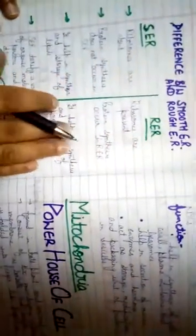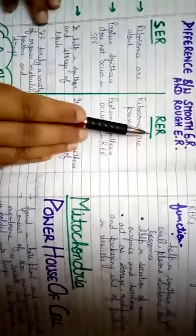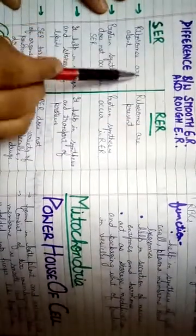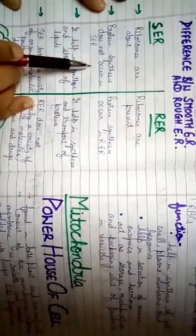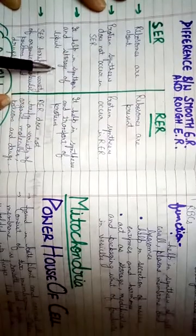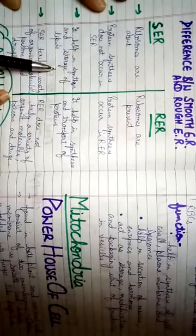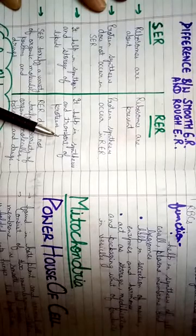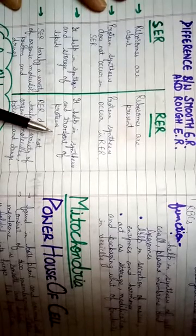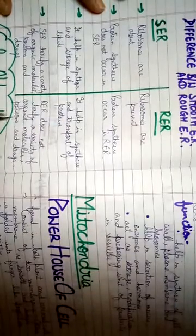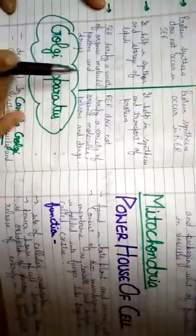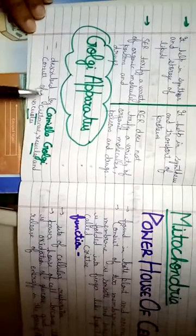The difference between smooth and rough endoplasmic reticulum: in smooth ER, ribosomes are absent, so protein synthesis does not occur; it is related with the synthesis and storage of lipids and detoxifies substances. In rough ER, ribosomes are present, protein synthesis occurs, and it is responsible for the synthesis and transport of proteins but does not detoxify substances.